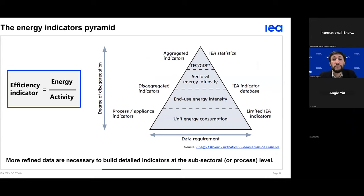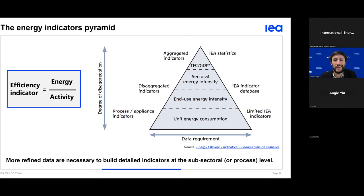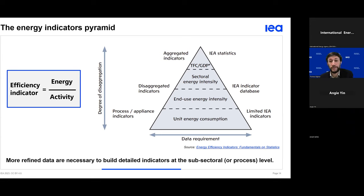An efficiency indicator is defined as the ratio of energy consumption to some related activity data. The IEA's methodology can be summed up with a pyramid graph: the top shows very aggregated indicators such as the energy intensity of the whole economy — useful as a proxy to compare country trends but offering few insights for policy decisions. The further down one goes, the more data is needed, with subsectoral and end-use data along with related activity data such as tons of goods produced or square meters of housing to be heated, enabling identification of focus points for improvements.